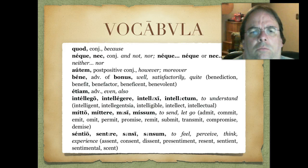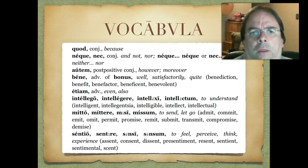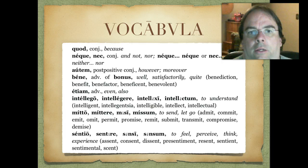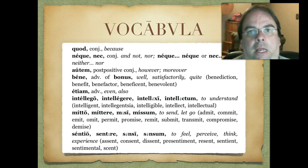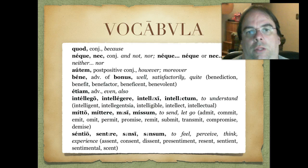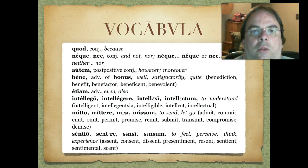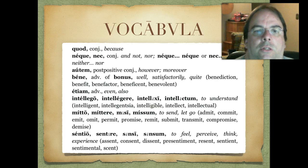Now we're going to have this little conjunction — you've probably seen it before — quod. In this case it can just mean because. This next combination is neque... neque, usually followed by nec. It's a conjunction that joins two phrases together, and it's almost always translated as and not, and nor, or neither...nor. So you'll see it neque...neque or nec...nec, and they all translate pretty much the same: neither this nor that. Keep an eye out for that — I think one will appear in your sententiae antiquae.